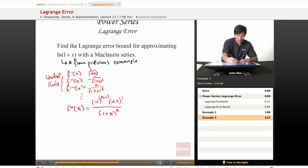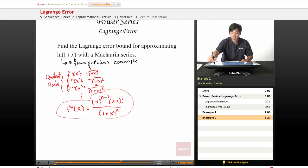So 1+x here is to the first power, second power, third power, so (1+x)^n. Now that we know this general form for f to the nth order derivative of x, we can apply it to our error bound formula.